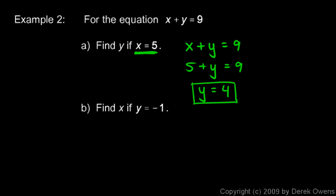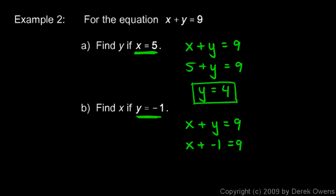In part b, find x if y equals negative 1. Take the equation x plus y equals 9 and rewrite it putting negative 1 in for y: x plus negative 1 equals 9. What value must x be to make that true? 10 plus negative 1 equals 9, so x has to equal 10. Therefore x equals 10 is the answer to part b.